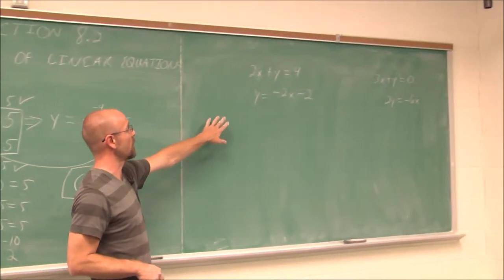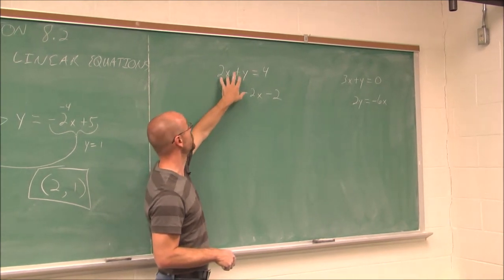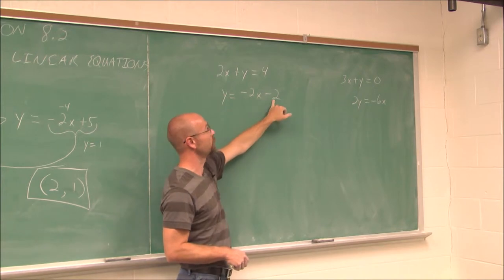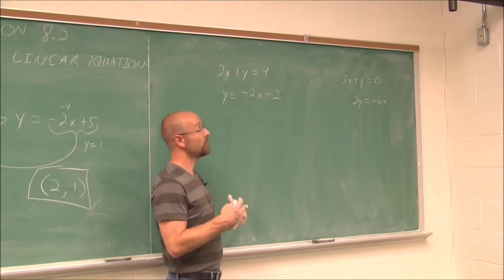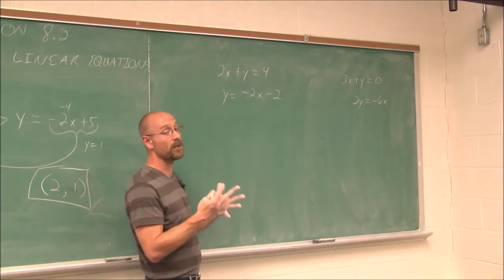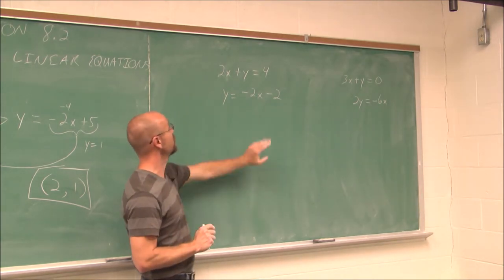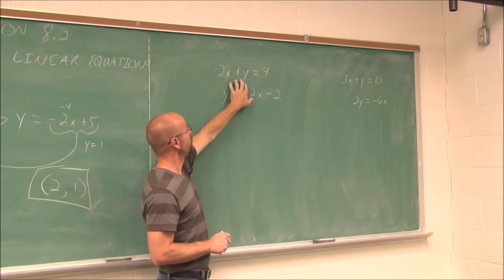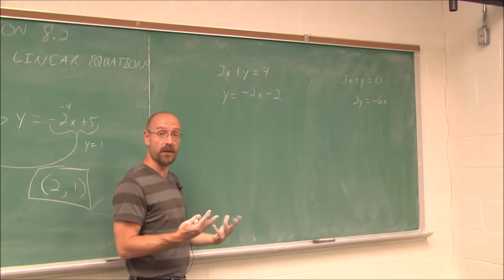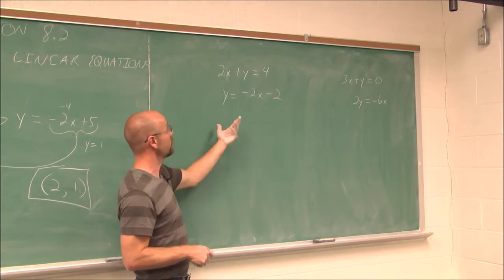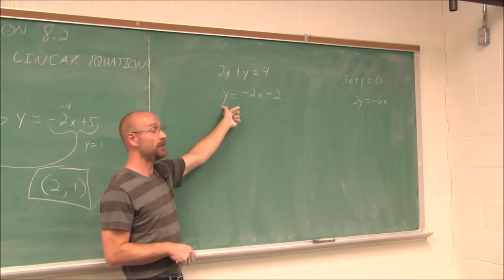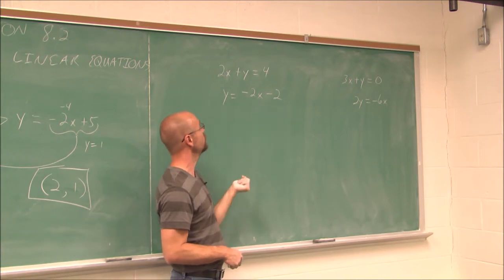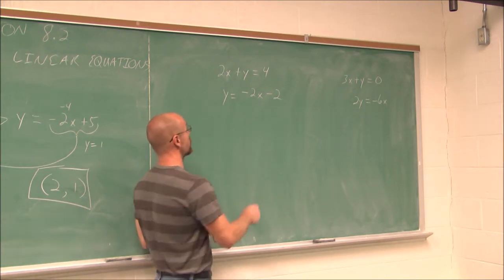All right, let's look at another example. Here we have the line 2x plus y equals 4. And the line y equals negative 2x minus 2. Now, the first thing you should always do is put them in the same form. But we're not going to do that. We'll do that after we're all done. Now, if I look at this and I say, well, I'm going to use the method of substitution, I want to solve for a variable. Well, it's my lucky day because one of my variables is already solved for. y equals negative 2x minus 2. So I can jump right to a substitution.